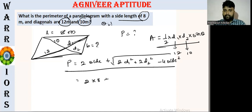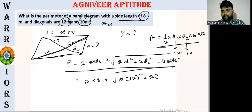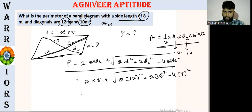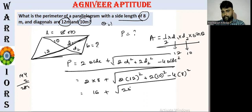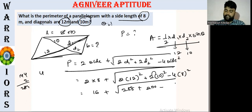2 into side s is square root of — so 2 into d1 s is 100 into 12 squared plus 2 into d2 s is 10 squared minus 4 into side s is 8 squared. So 2 into 8 s is 100, so this is equal to square root of 12 is 140 into 2 into 808 plus 10 squared s is 100 into 100 minus 4 into 8 squared. 8 squared is 8 squared. Yes?